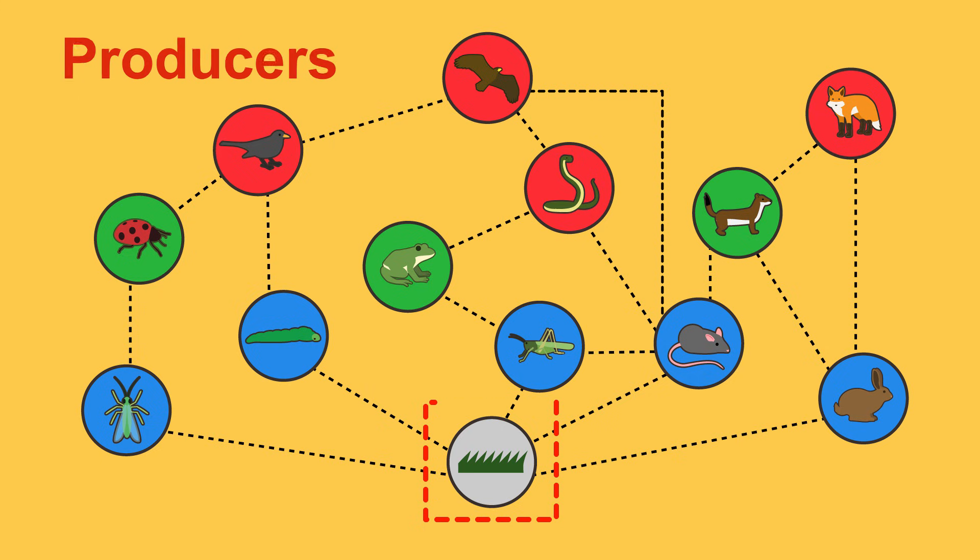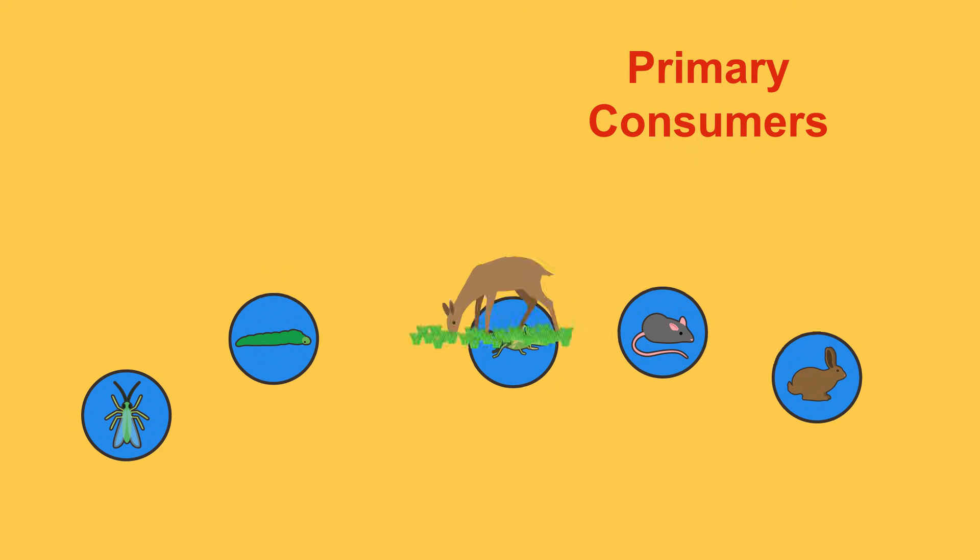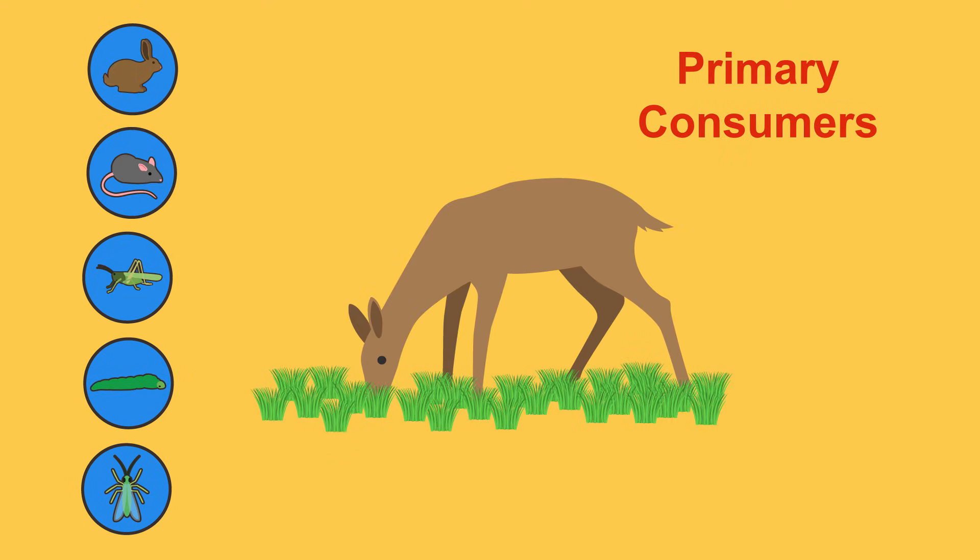Then there are primary consumers. These are the second organisms in the food chain. These consume producers and are nearly all herbivores. They only feed on plants.